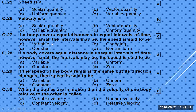If a body covers equal distances in equal intervals of time, however small the interval may be, the speed is said to be uniform. If it covers equal distances in unequal intervals of time, the speed is variable.